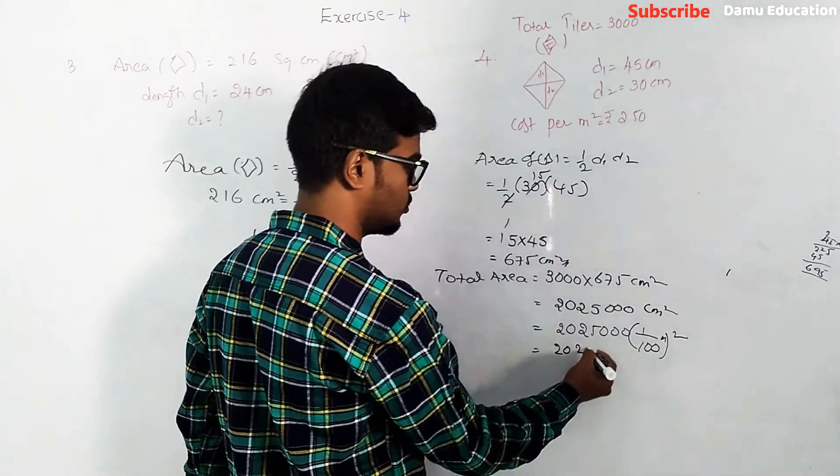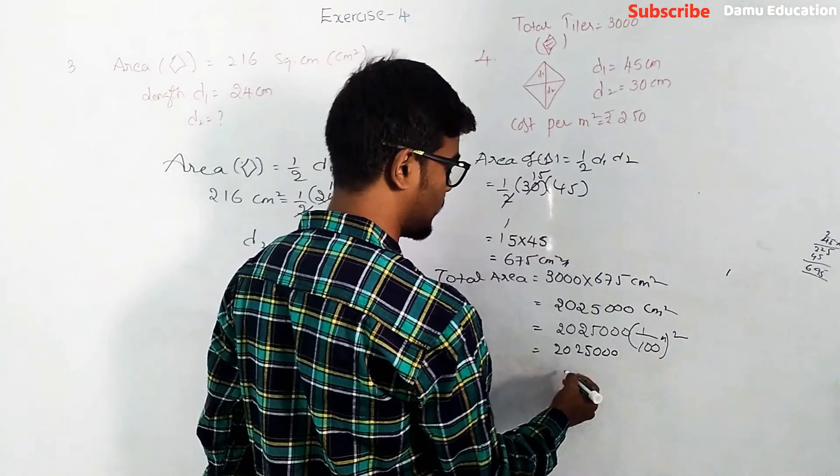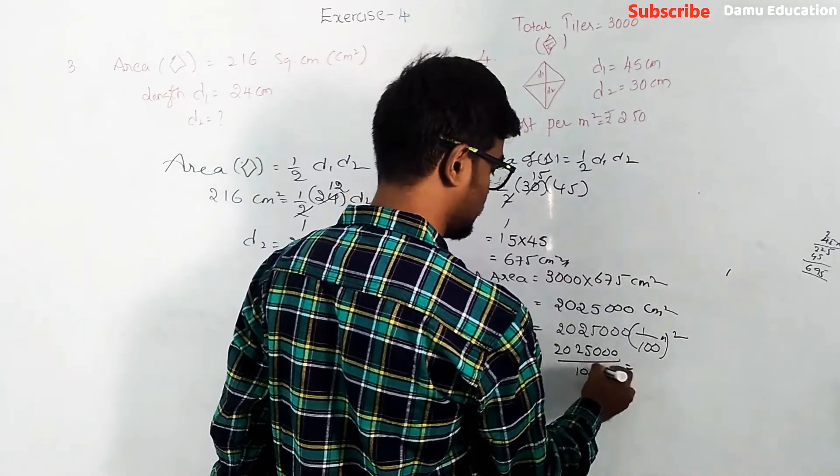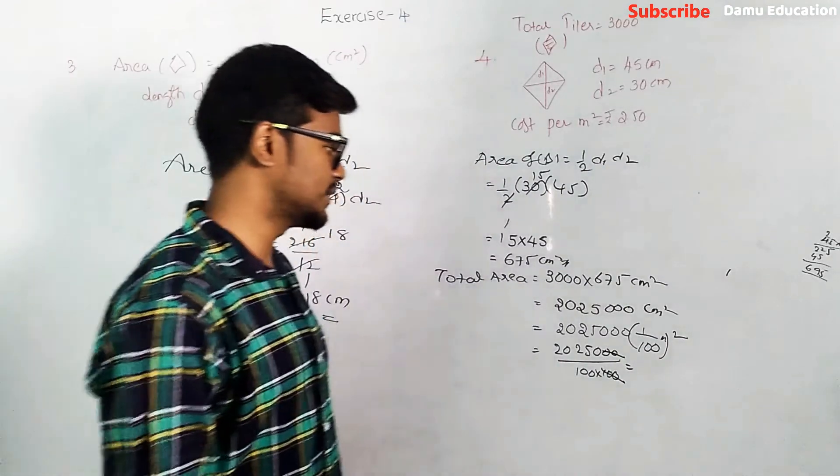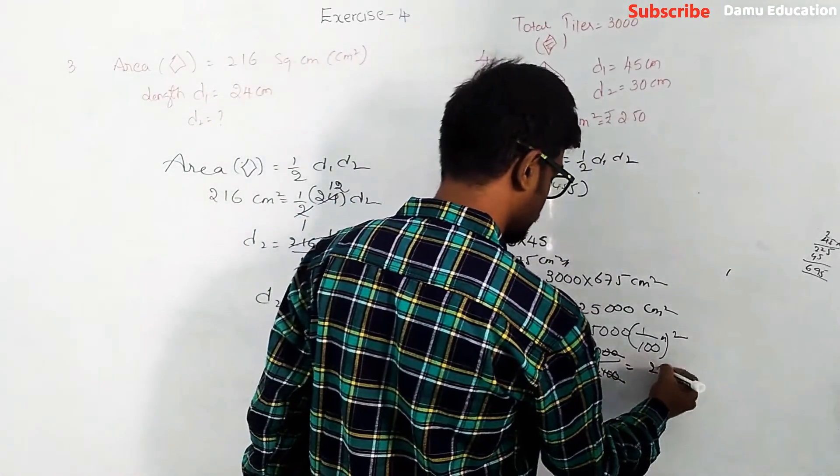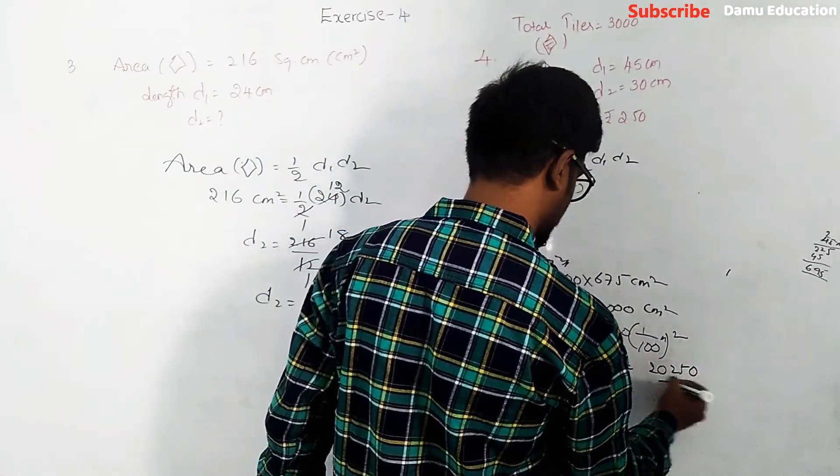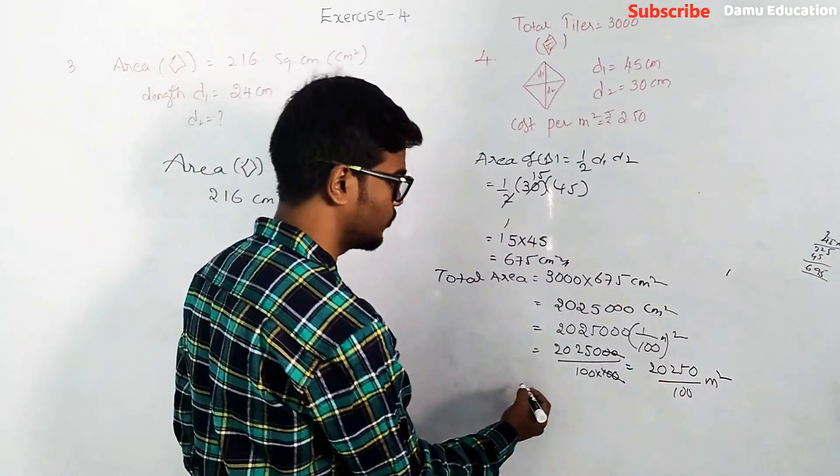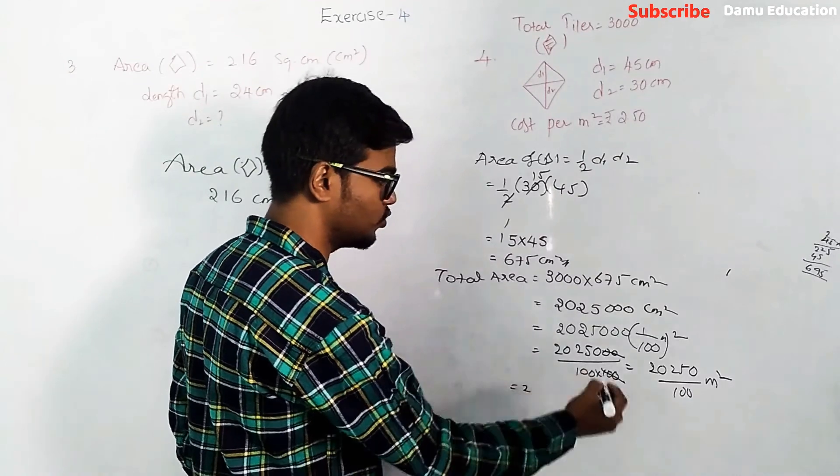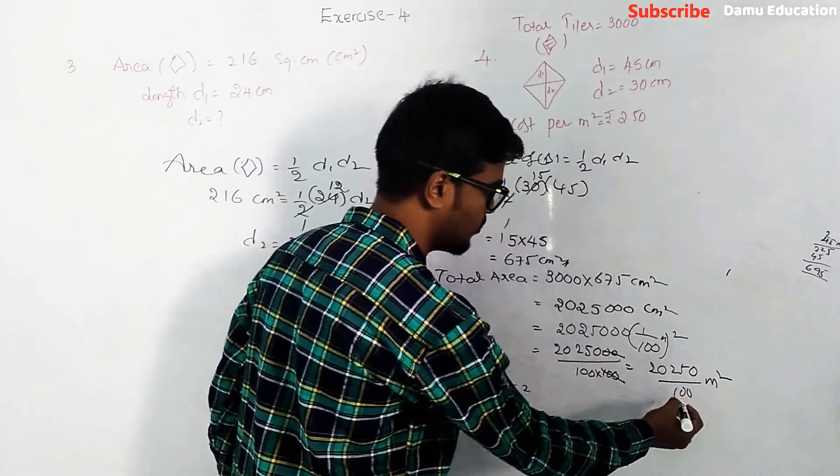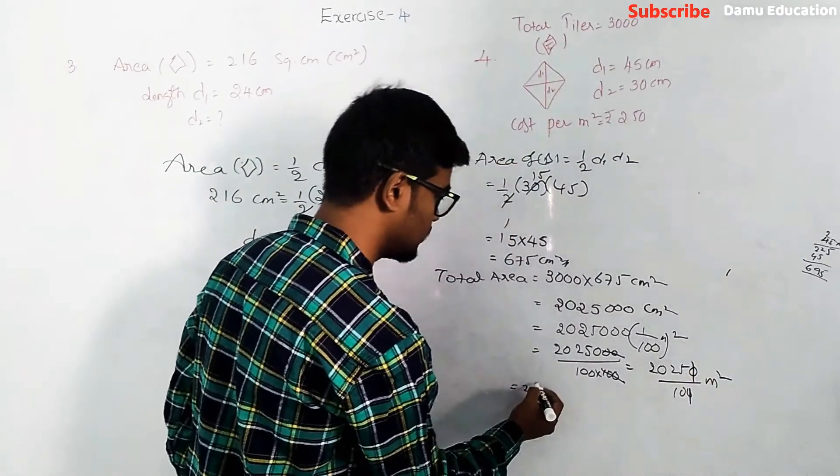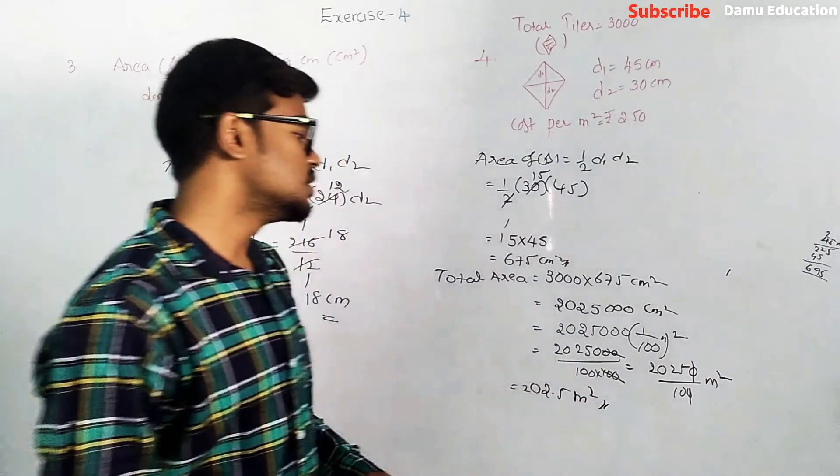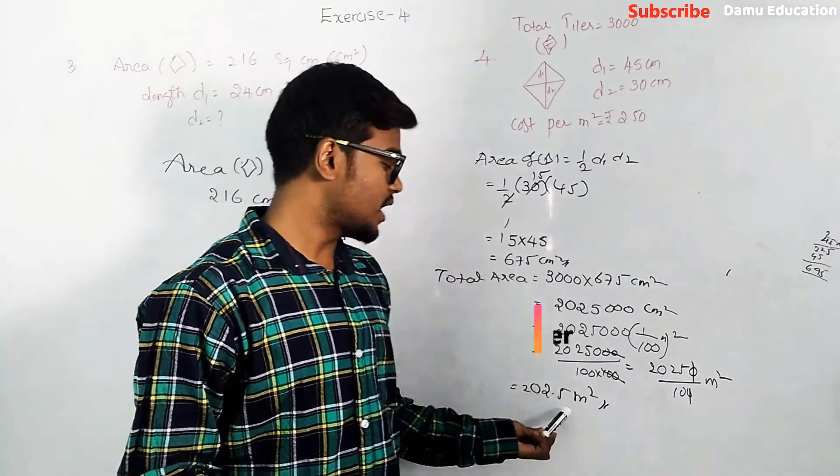So 2,025,000 by hundred into hundred, that is 10,000. These hundreds will cancel, then it will be 2,025,000 by 10,000 meter square. Two zeros cancel, so 202.5 meter square. This is the total area.